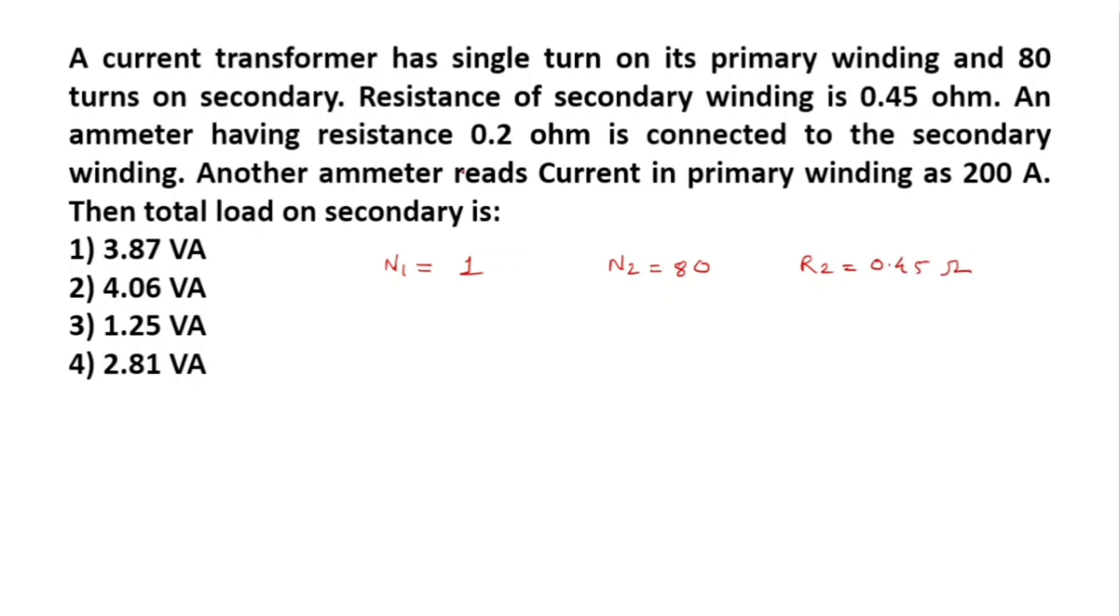And ammeter having resistance 0.2 ohm, we denote as RM equals 0.2 ohm, is connected to the secondary winding. Another ammeter reads current in the primary, means I1 equals 200 ampere.